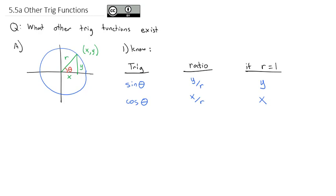We also have tangent, which we've seen before. The tangent of theta is the opposite y over the adjacent x, and what's interesting is it doesn't matter what the radius equals — it's always y over x. Since y is the sine of theta and x is the cosine of theta, another way to think about tangent is sine over cosine.